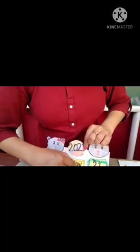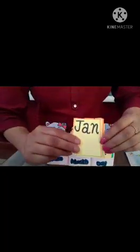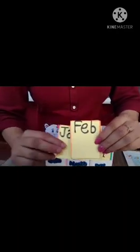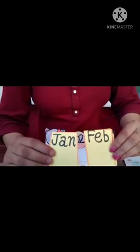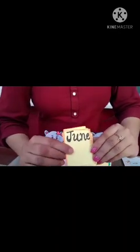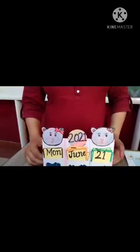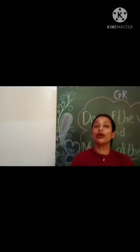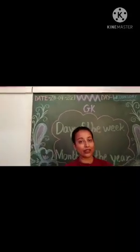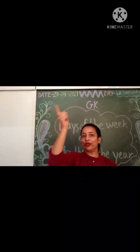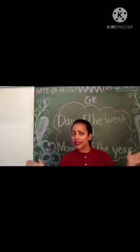Now I find the month of my birthday. January, February — June! Here it is. My birthday is on 21st June. So children, this way you find a calendar from your home and put a circle on your birthday date. I hope you all understood.